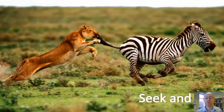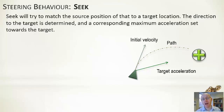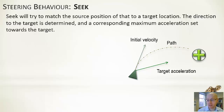We'll start by looking at seek and flee, doing a compare and contrast with the kinematic algorithm to see how it differs — mostly it's going to be the same. Seek is going to try to match the target position, so we move to occupy the same position as whatever target we're looking at. We determine the direction towards the target and output an acceleration that brings us towards it. The acceleration smoothly changes the velocity so we move towards our target location.